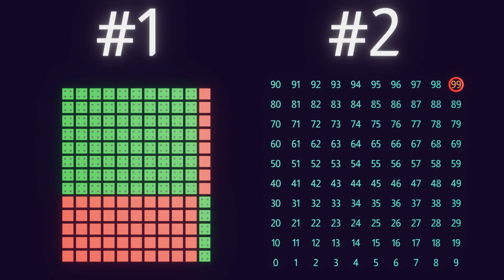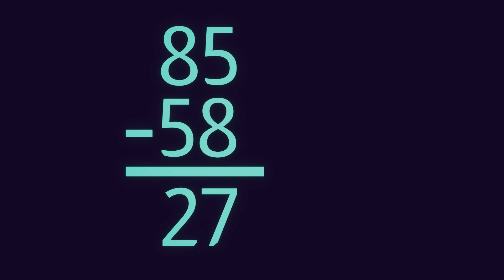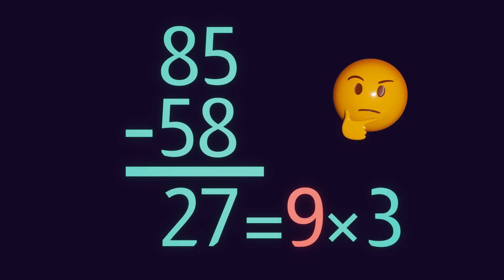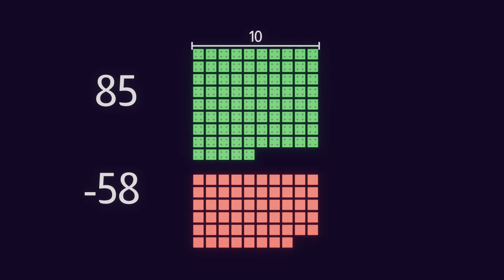Let's look at two possible proofs. The first is geometric. Let's take 85 minus 58, which is 27 or 3 times 9. What's a way to visualize this? Draw 85 squares, 10 squares wide, then 58 squares.